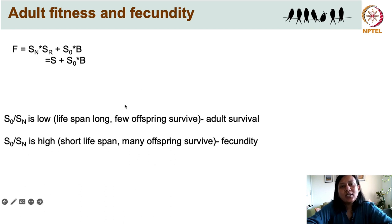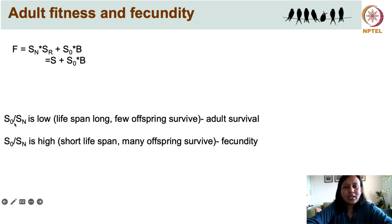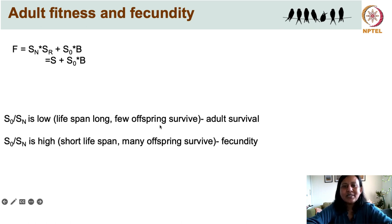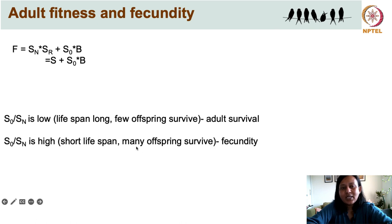Based on this equation, if an adult has a long lifespan but produces few offspring, this typically leads to a lower S0-to-Sn ratio, and in this case the best strategy is to maximize adult survival and have fewer young ones. On the other hand, if the adult has a shorter lifespan but many offspring survive, this ratio becomes high, and in this case it is best to adopt a strategy which maximizes reproduction over adult survival.